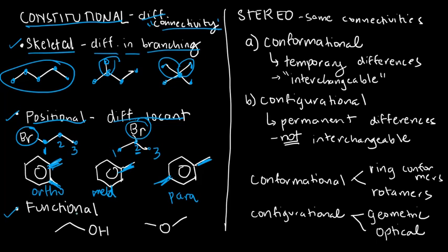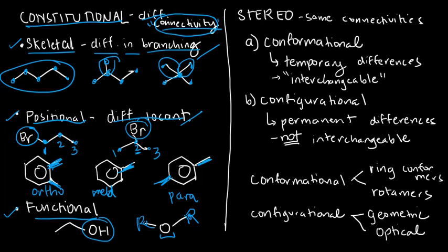The third type is functional isomers, and this is the easiest because it's so obvious. If I have OH for alcohols here, and an O between two carbons — that's ROR, an ether — it's a no-brainer: I have different functional groups, so most likely they are functional isomers. So connectivity involves any of three factors: branching, location or position of functional groups, and the actual functional group. If any of those three differ, we have constitutional isomers.